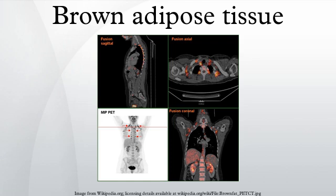In rare cases, brown fat continues to grow rather than involuting. This leads to a tumor known as a hibernoma.